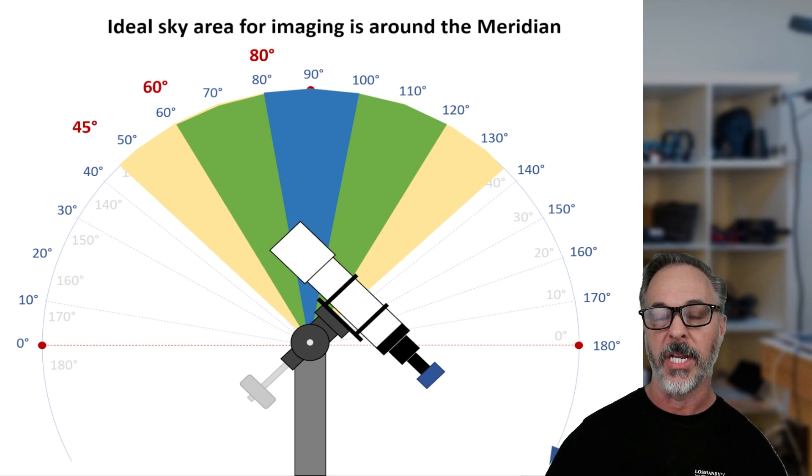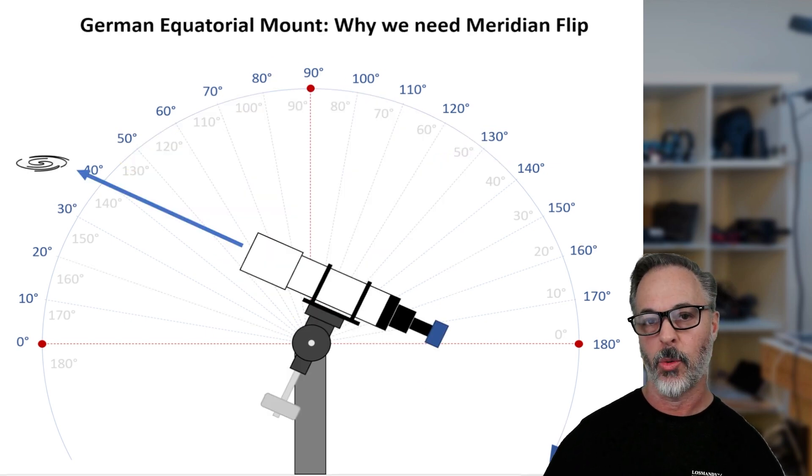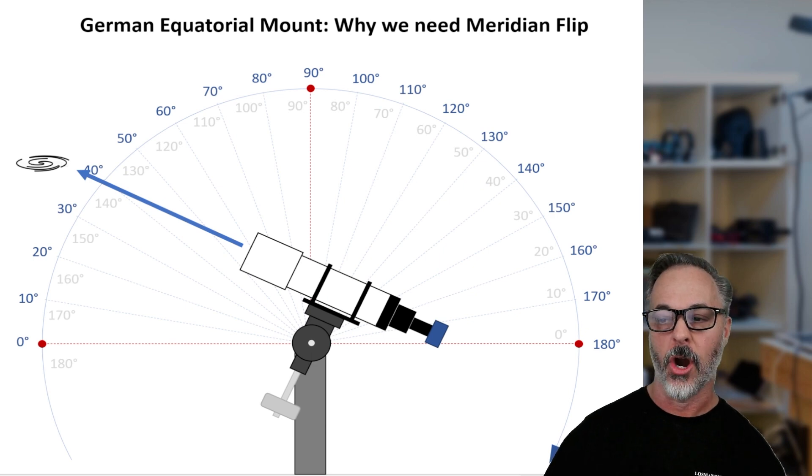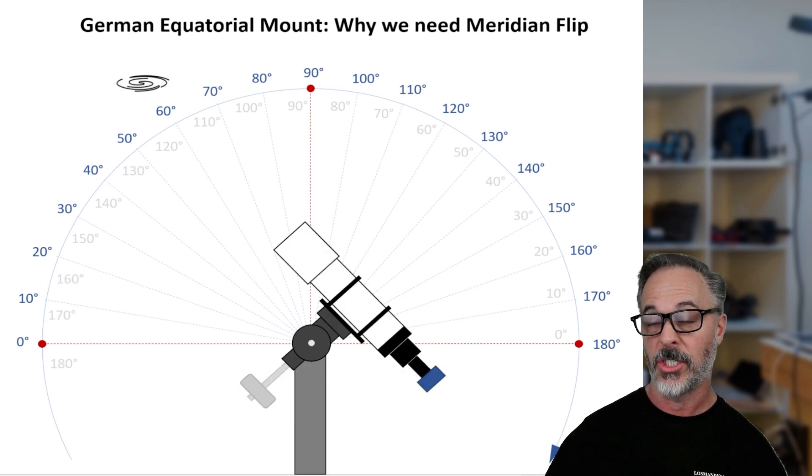So now let's talk about why we need a meridian flip and it has to do with a German equatorial mount design. So in this example, we're shooting a target and it's starting out about 40 degrees in the Eastern sky. And as we track it goes up to 60 degrees, everything's working fine. Hopefully our guiding is doing well, our tracking is doing well.